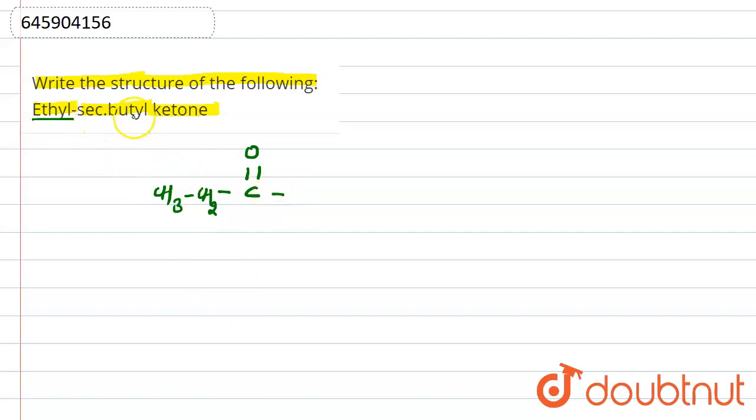And on the other side, we have to write secondary butyl. Now what is secondary butyl? Secondary means two degree carbon, and butyl means four carbons will be there. So if this carbon is connected directly with this one, it will be called as normal butyl.